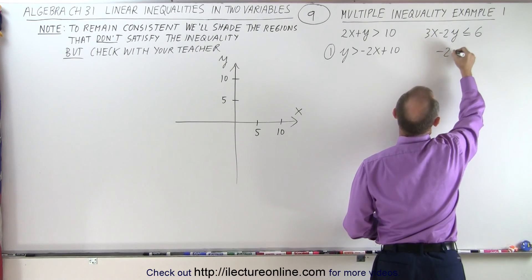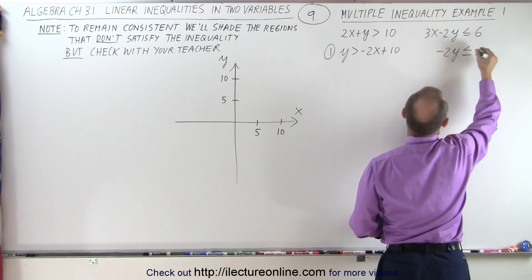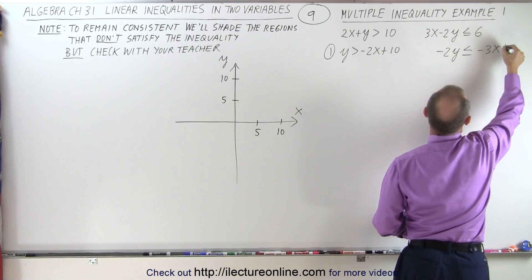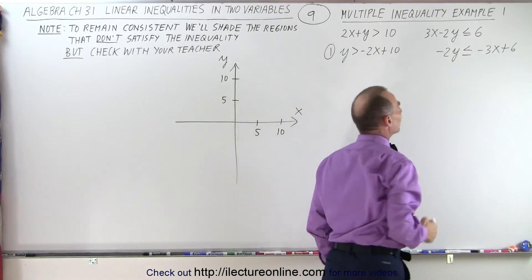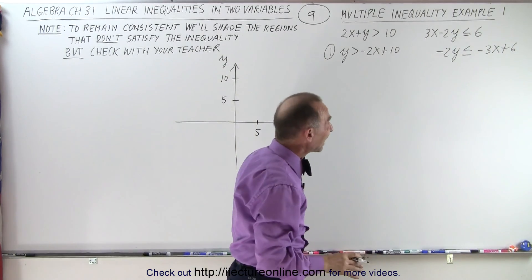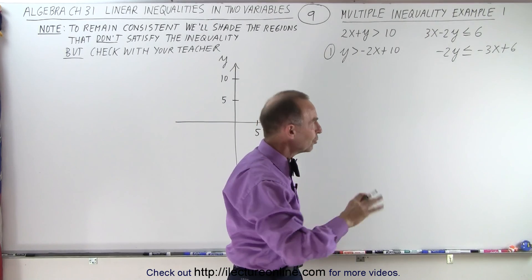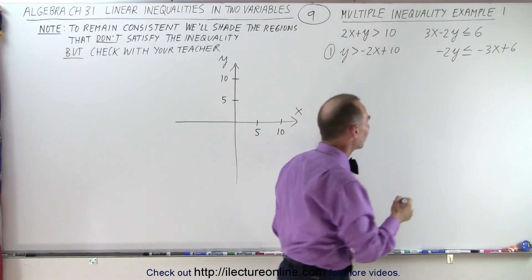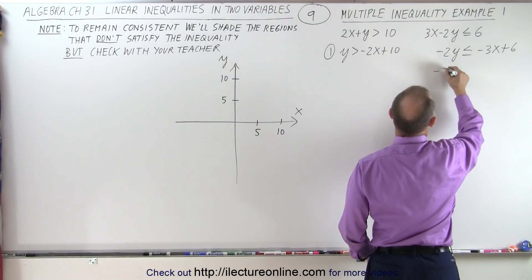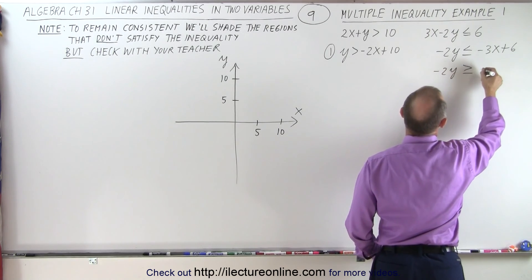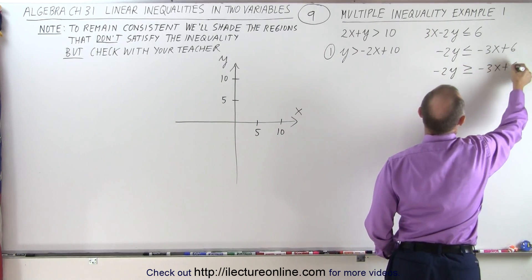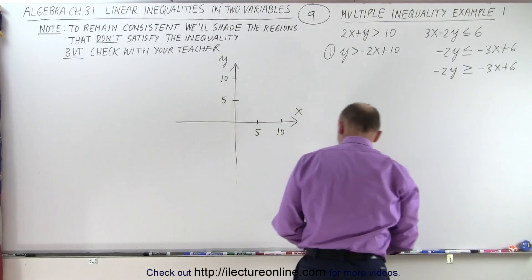Here we can write this as minus 2y is less than or equal to minus 3x plus 6. But notice we're now going to divide both sides by a negative 2. When we do that, we have to turn the inequality symbol around. Here we have minus 2y is greater than or equal to minus 3x plus 6 because we're going to divide both sides of the inequality by a negative 2.